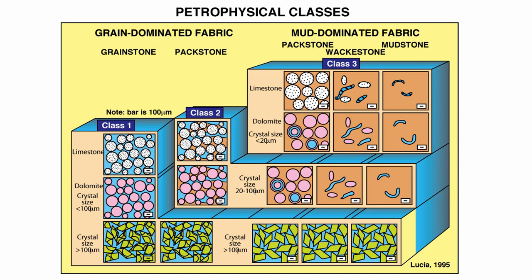So the pack stone, wackestone, and mudstone — whether they are limestone or dolomite — will have very small pore space, and therefore very little permeability for an increase in porosity.